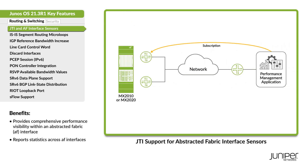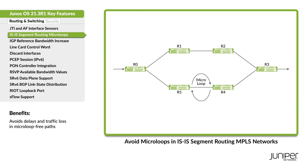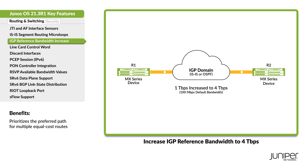Use AF Interface Sensor Support on JTI to export interface statistics from a Juniper device to an outside collector. Enable post-convergence path calculation on a device in a segment routing MPLS network to avoid microloops. We've increased the maximum reference bandwidth for IS-IS and OSPF from 1 to 4 terabits per second.